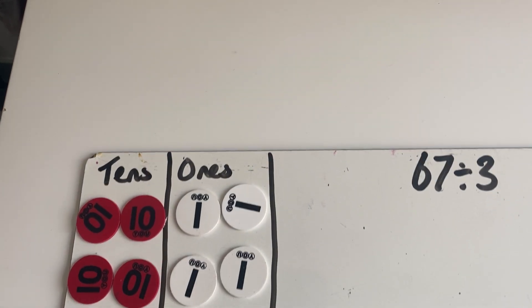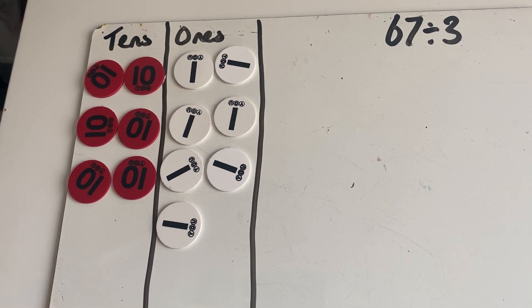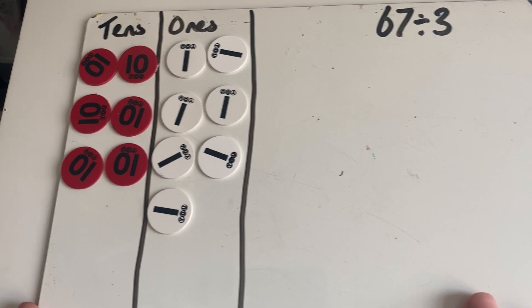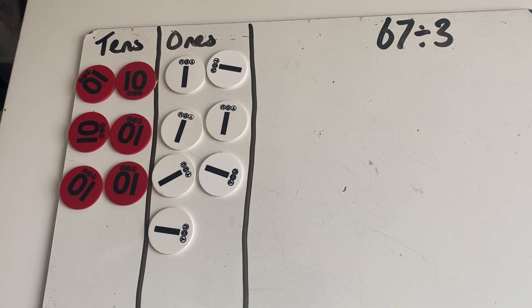Okay, so today your learning is going to be following on from yesterday. We're going to be dividing a two-digit number by a single digit, but today we're going to be looking at remainders. Remainders is basically a way of saying that you've got a value left over. We're going to use something similar to what we did yesterday. I'm going to look at how it's also written in a written method as well.